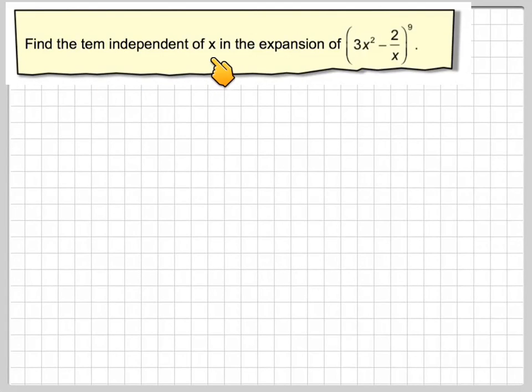Find the term independent of x in the expansion of 3x squared minus 2 over x to the 9.